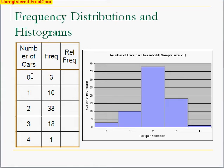Three people had no cars, 10 had one, 38 households had two cars, 18 had three cars, and one had four cars. So we can make what we call a histogram of this. And the histogram is very simple.